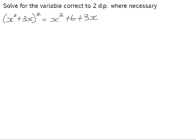Let's consider this example: solve for the variable correct to two decimal places where necessary. It looks to us as though it is a quadratic equation. We have an x squared and it is currently not in standard form. So your first instinct might be to multiply out and get it into standard form. Let's see what happens if we do that.